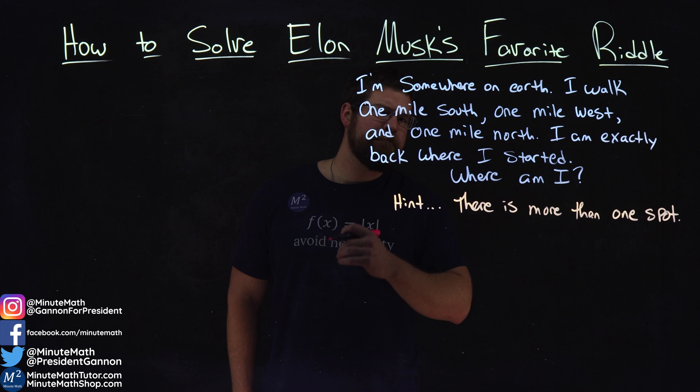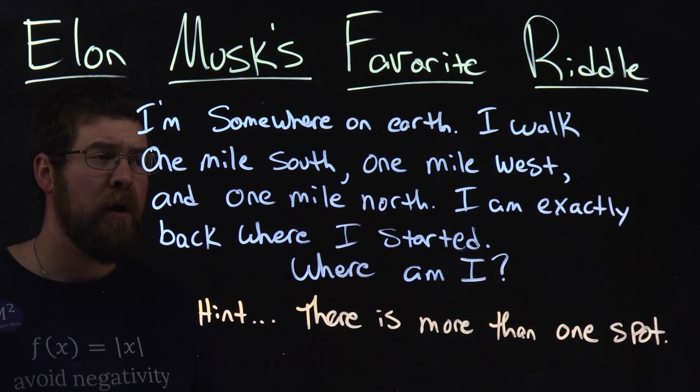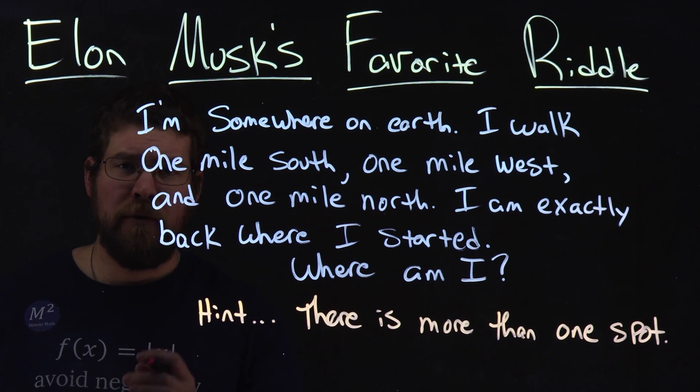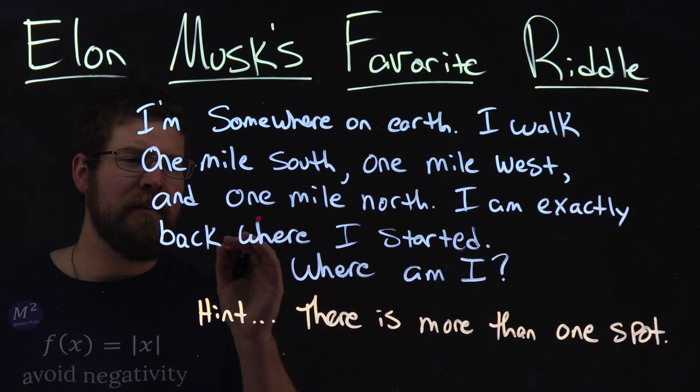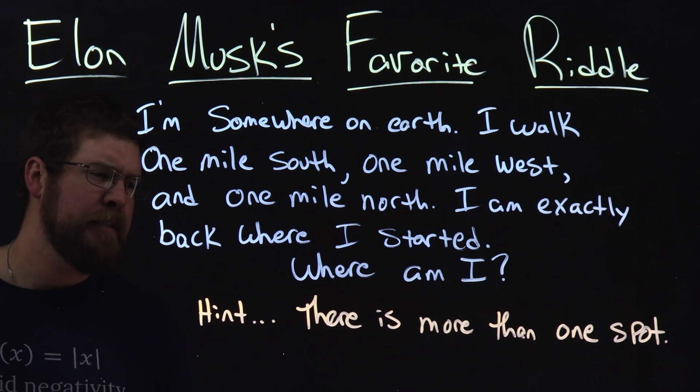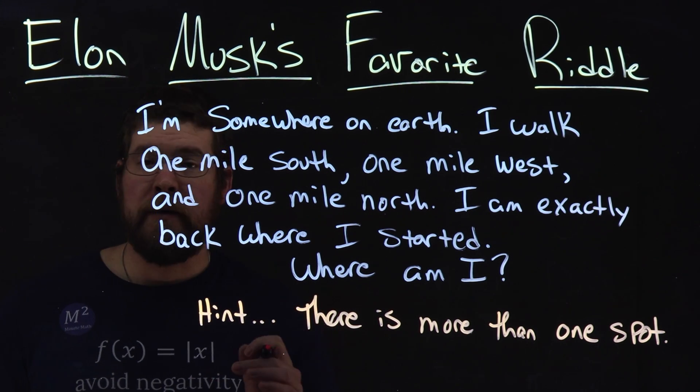So the riddle is this: I'm somewhere on earth. I walk one mile south, one mile west, and one mile north. I am exactly back where I started. Where am I? And there's a hint here - there is more than one spot.